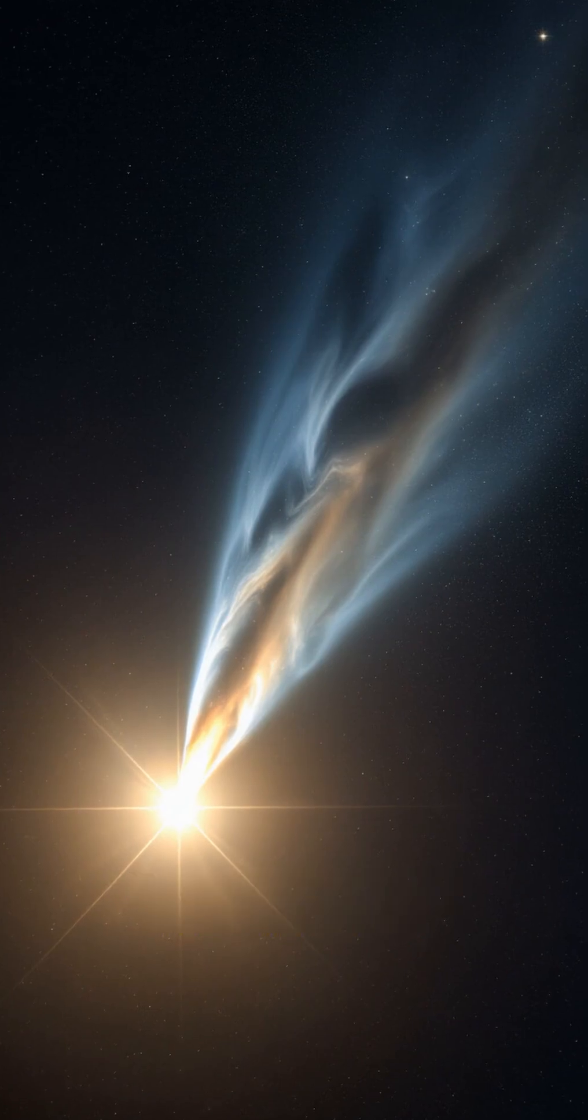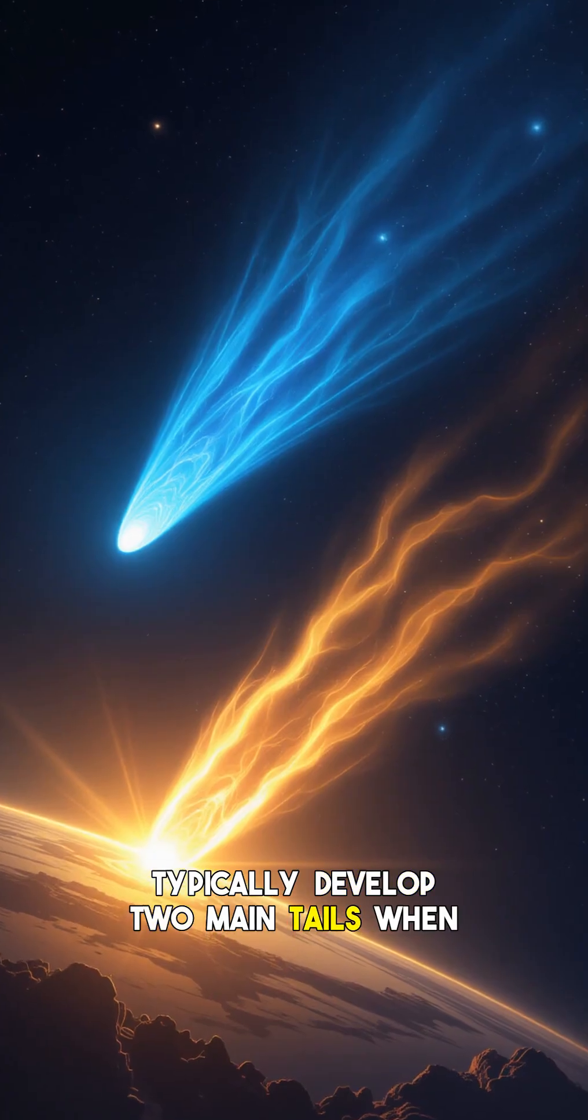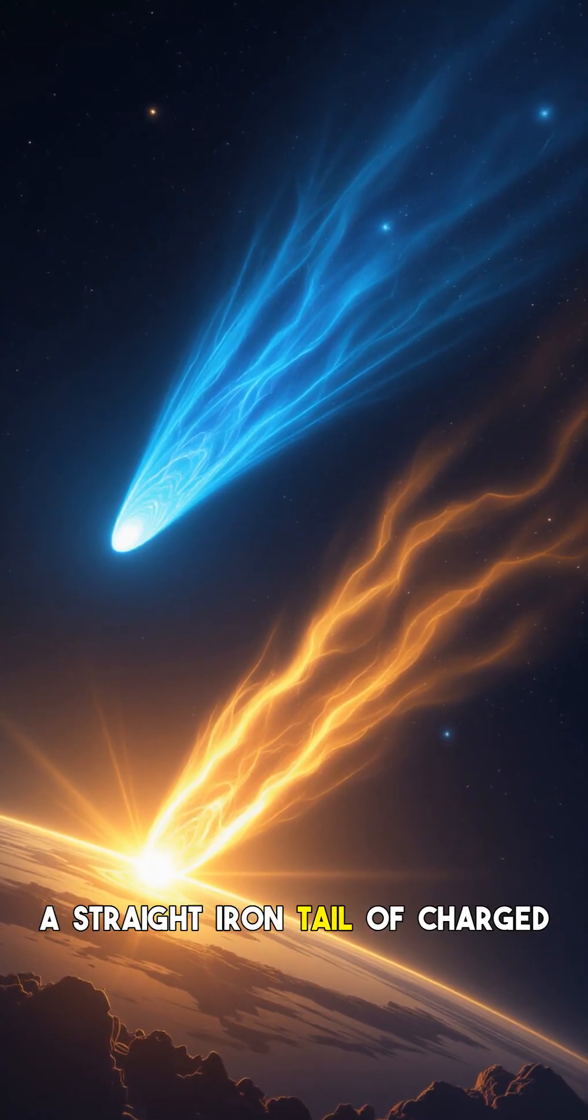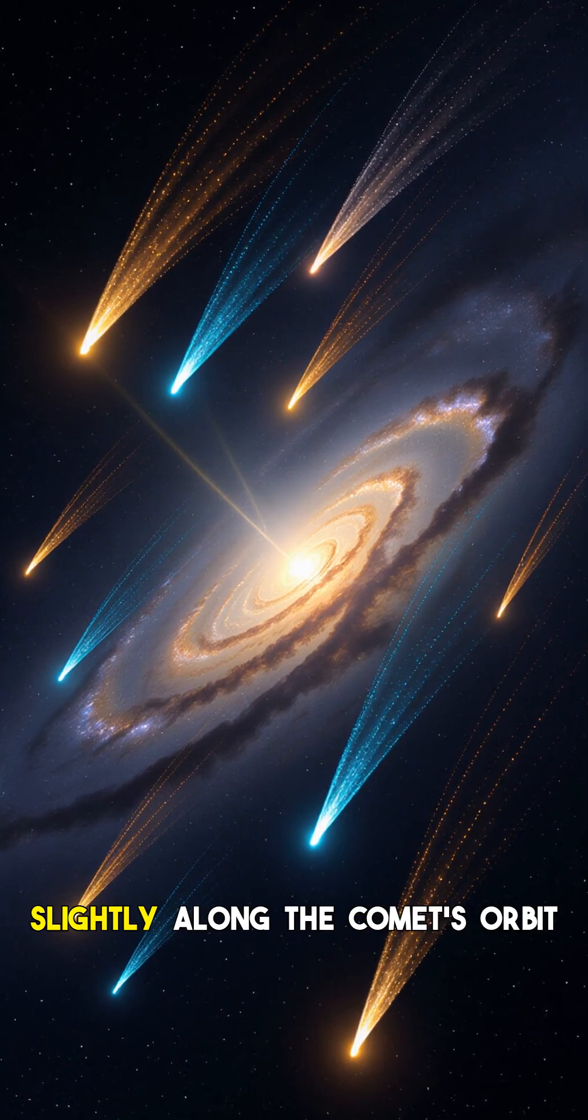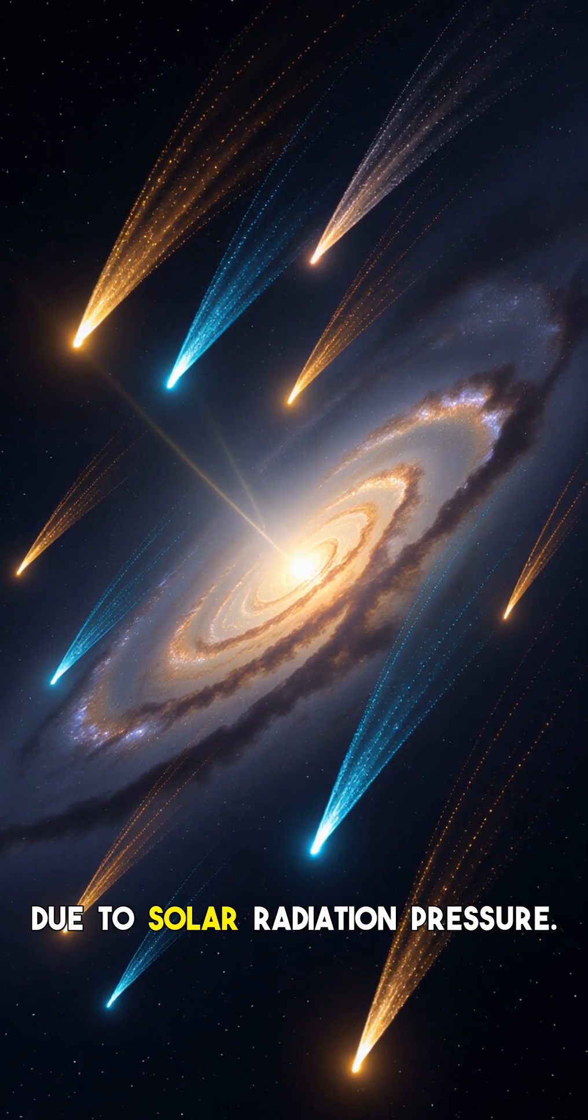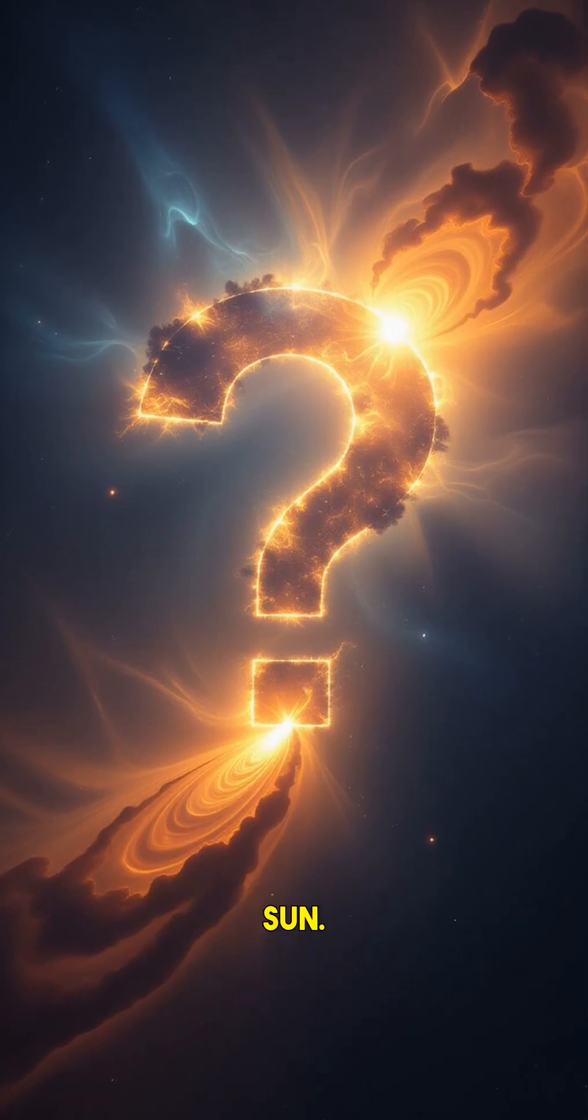Comets, often called dirty snowballs, typically develop two main tails when they approach the sun. A straight ion tail of charged gases pushed by the solar wind and a dust tail that curves slightly along the comet's orbit due to solar radiation pressure. Both usually point away from the sun.